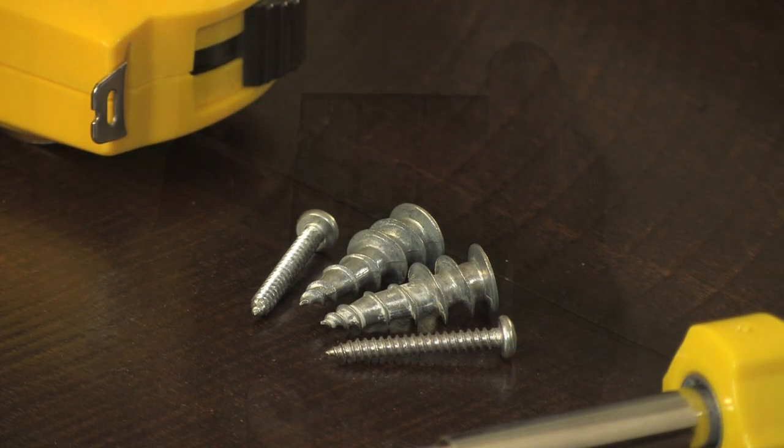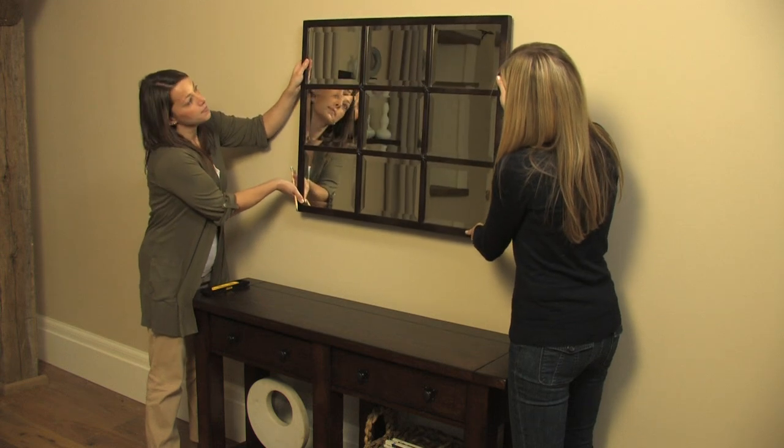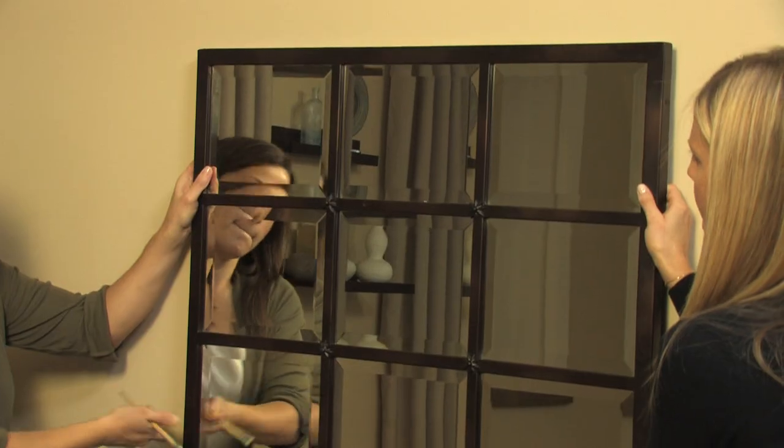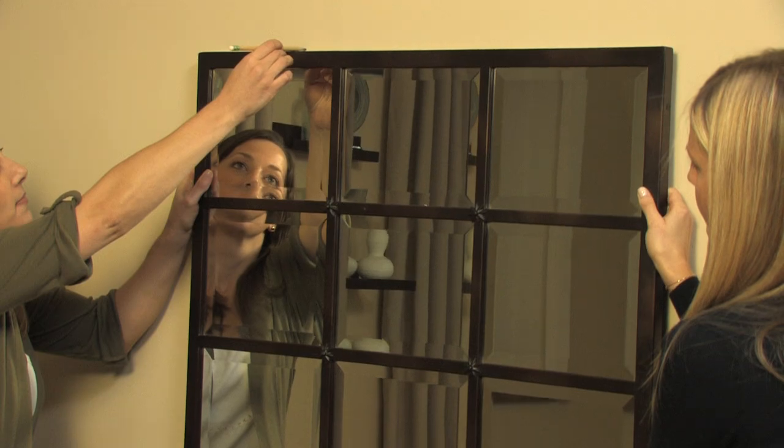With the help of another person, hold your mirror up to the wall to decide where you'd like it to hang. Use the pencil to mark roughly where the top of the mirror will fall.